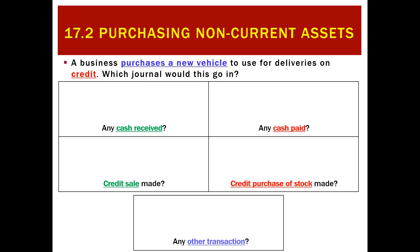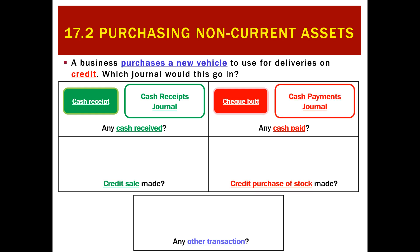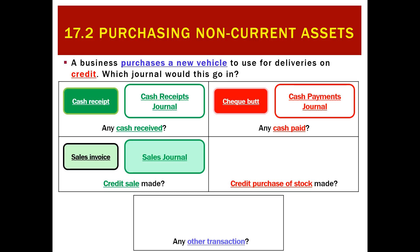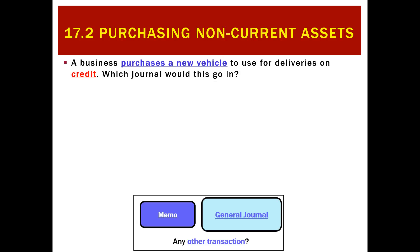Now take the same transaction but change one thing: instead of buying the vehicle for cash, we buy it on credit. The business has not received any money, so it won't go in the cash receipts journal. It hasn't paid any money, so it won't go in the cash payments journal. It hasn't made a credit purchase of stock — we've bought a non-current asset, a vehicle. So there's no special journal that records this transaction, and therefore it goes in the general journal.